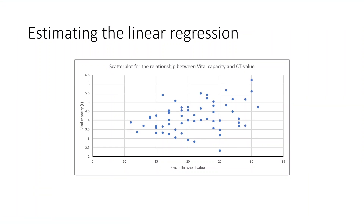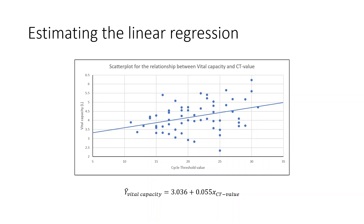First, let's display our data visually using a scatter plot. On the y-axis we have vital capacity and on the x-axis the cycle threshold value. We can already see a positive relationship: higher CT values are associated with higher vital capacity, which ties in with our hypothesis — the lower the viral load (higher CT value), the better the lung functioning. To quantify that relationship with linear regression and ordinary least squares, we get the following model: estimated vital capacity equals 3.036 plus 0.055 times the CT value. In other words, for each unit increase in CT value, estimated vital capacity goes up by 0.055 liters.